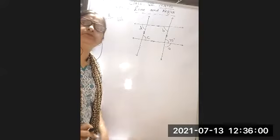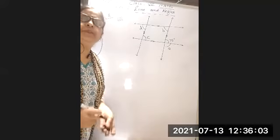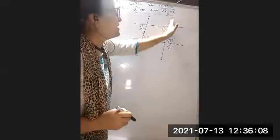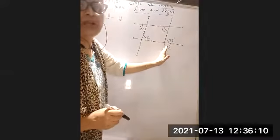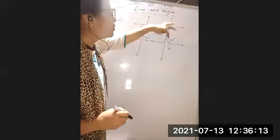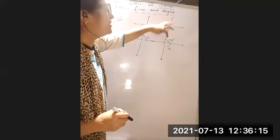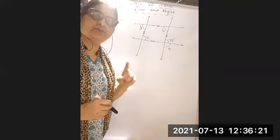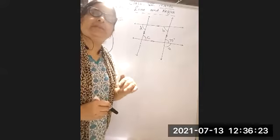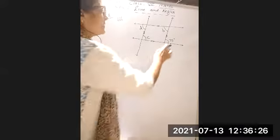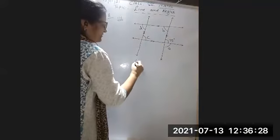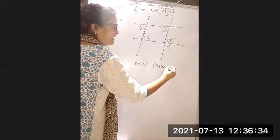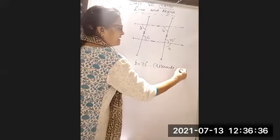So how will you find these four angles? I will tell you the method. If two lines are parallel and a transversal intersects them, the angles on opposite sides are the alternate interior angles. So angle B and 75° — this relation is the alternate interior angle.